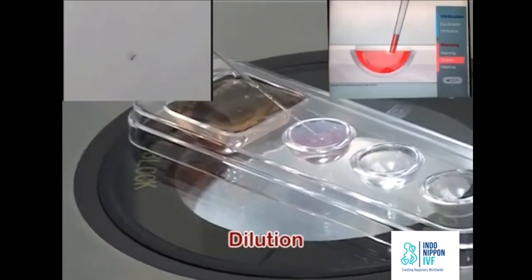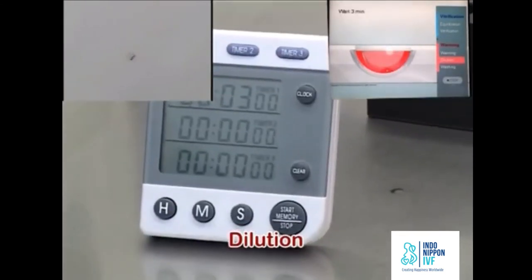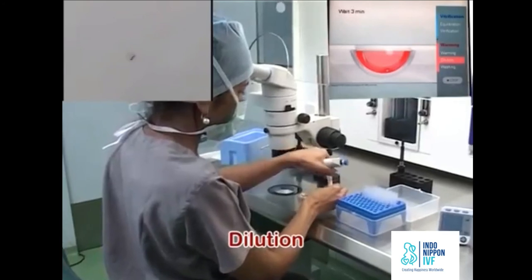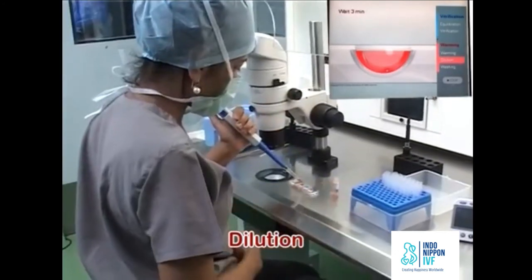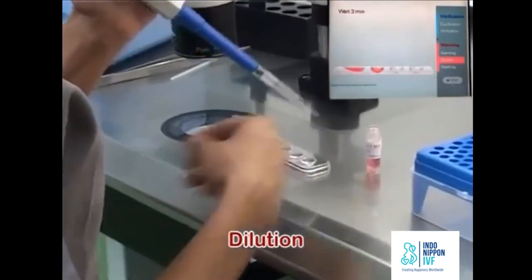This is for the most gradual displacement from TS to DS. Wait for 3 minutes. While waiting, fill the WS1 and WS2 wells with 300 microliters of washing solution.